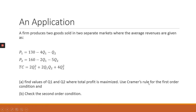The question says to use Cramer's rule for the first-order condition, and the second part requires us to check the second-order condition. So analyzing what the question requires: first, we solve an optimization problem where profit is being maximized. We want to find the level of Q1 and Q2 that maximize profits — these are the critical values, the critical points — and we must use Cramer's rule to find them.